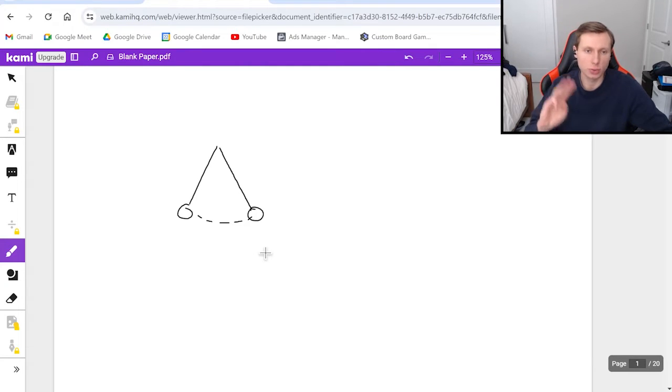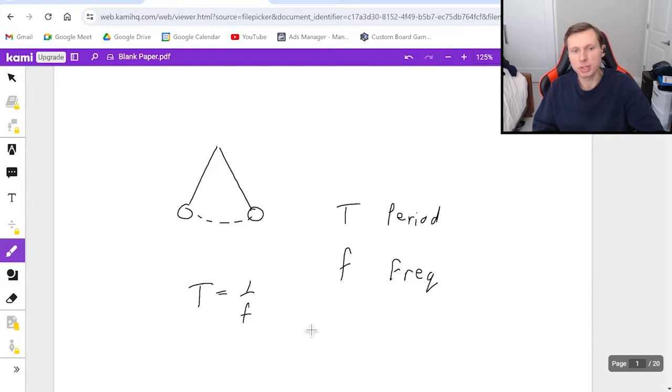And so there's three quantities we need to know. We need to know T, which is the period, which is to say how long it takes for the pendulum to swing back and forth one time. Then we have frequency, F. Frequency is just the reciprocal of period. Remember that equation T equals one over F. And frequency is basically the opposite of period where it's the number of oscillations per second.